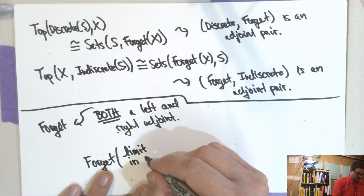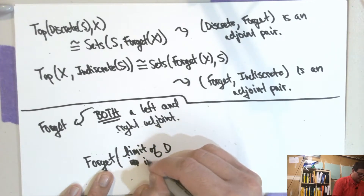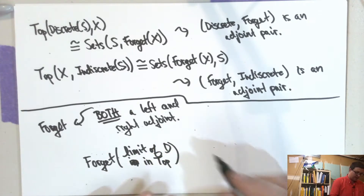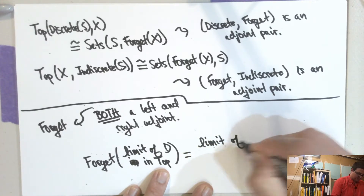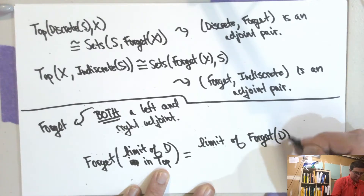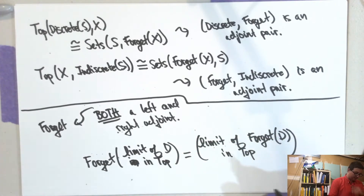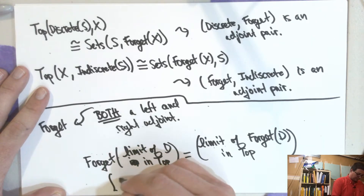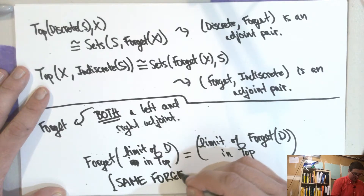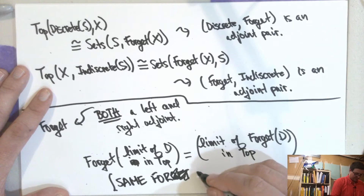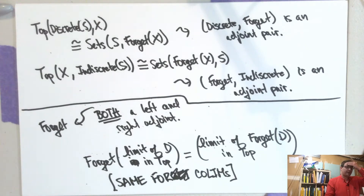So what does this say? It says that if you take a limit in the category of topological spaces, forget preserves it because it's a right adjoint. So the limit of diagram D in the category of topological spaces — we can take the same diagram and compute it in sets — and since forget is also a left adjoint, the same thing goes for co-limits.